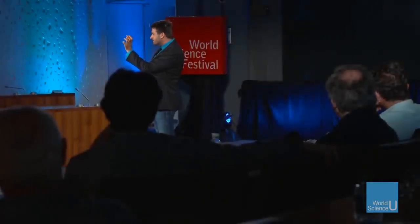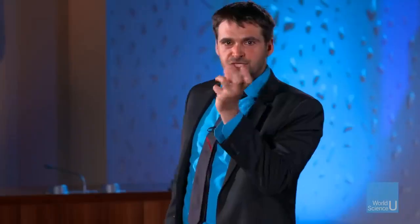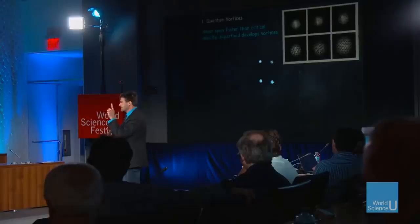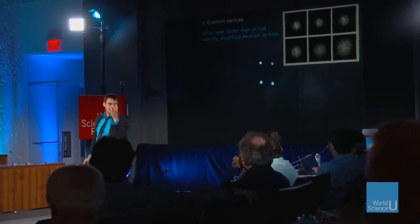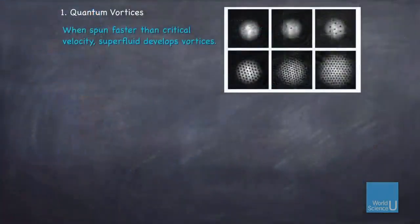Imagine our little bucket of liquid helium, which we cool down so it now looks nice and still. If you start rotating the bucket — when you rotate a bucket of water, water rotates with the bucket. Liquid helium does not — it will remain still. But if you spin it too fast, something has to give. Instead of starting to spin homogeneously as a whole liquid, it starts forming vortices, little vortices inside the fluid. As you spin it faster and faster, you develop more and more of these vortices.